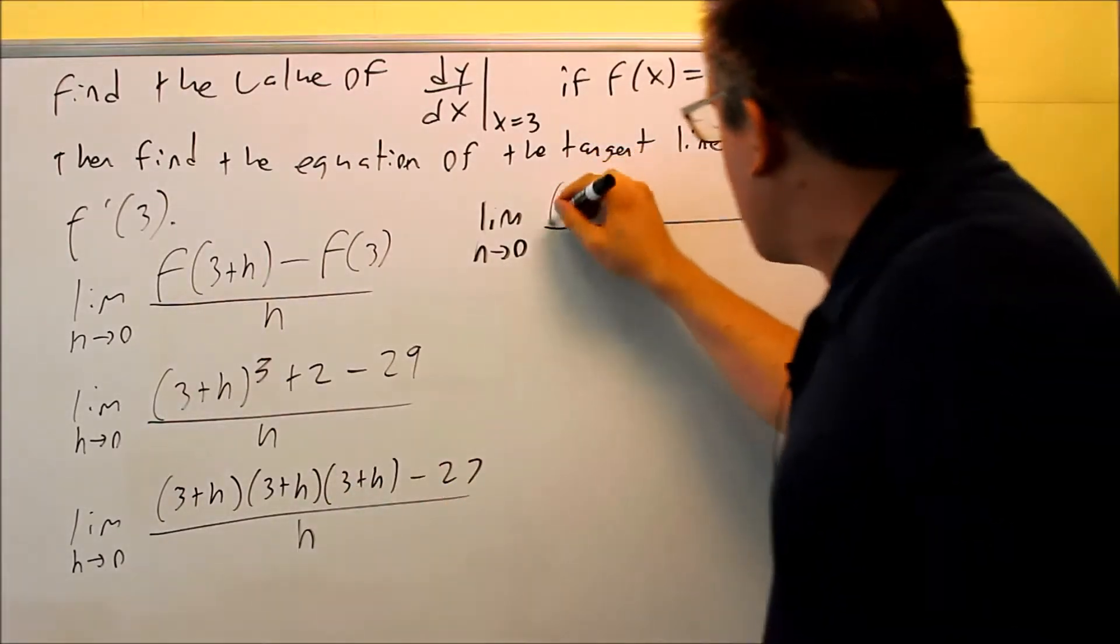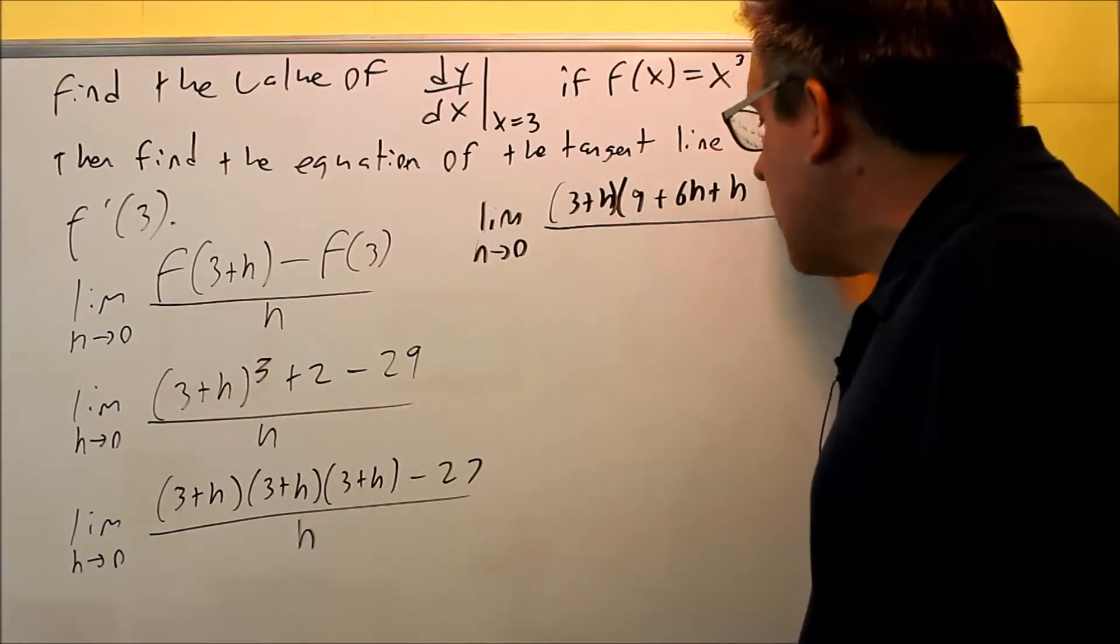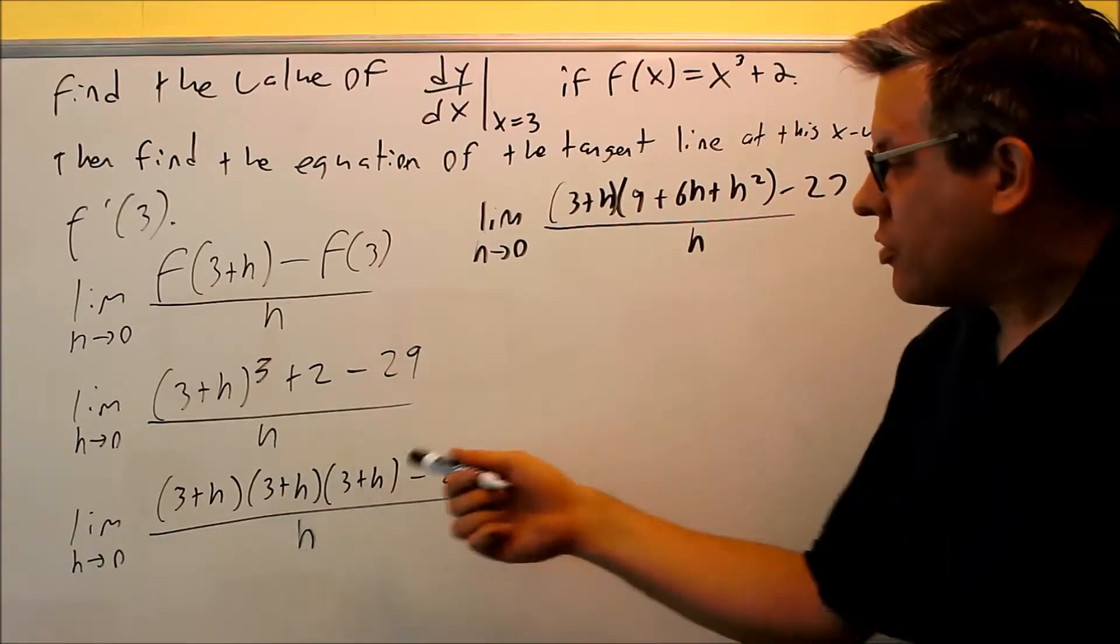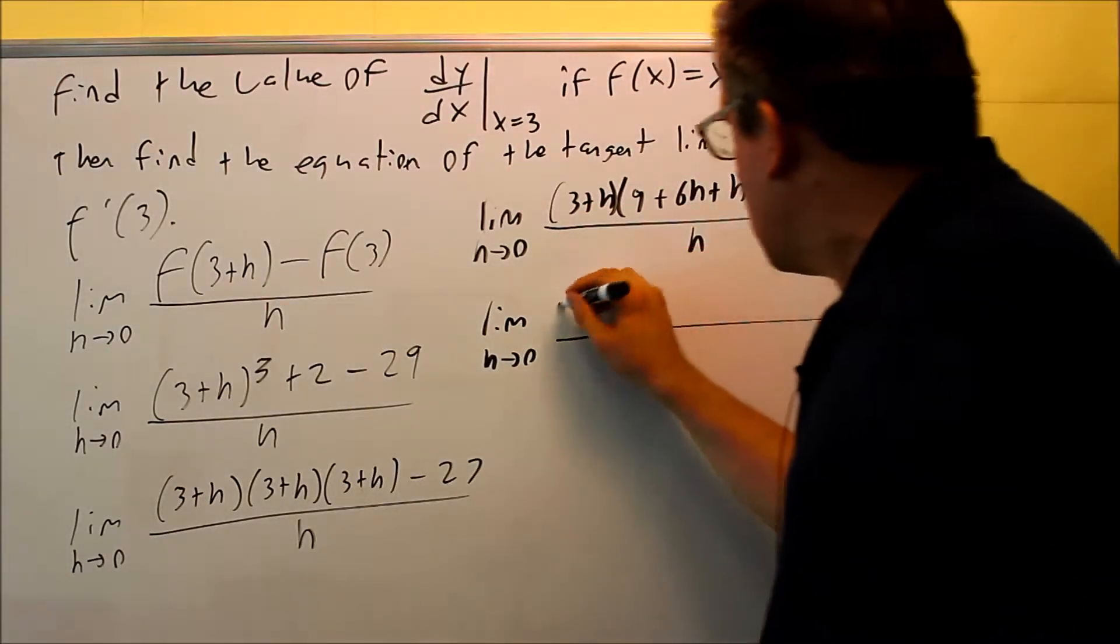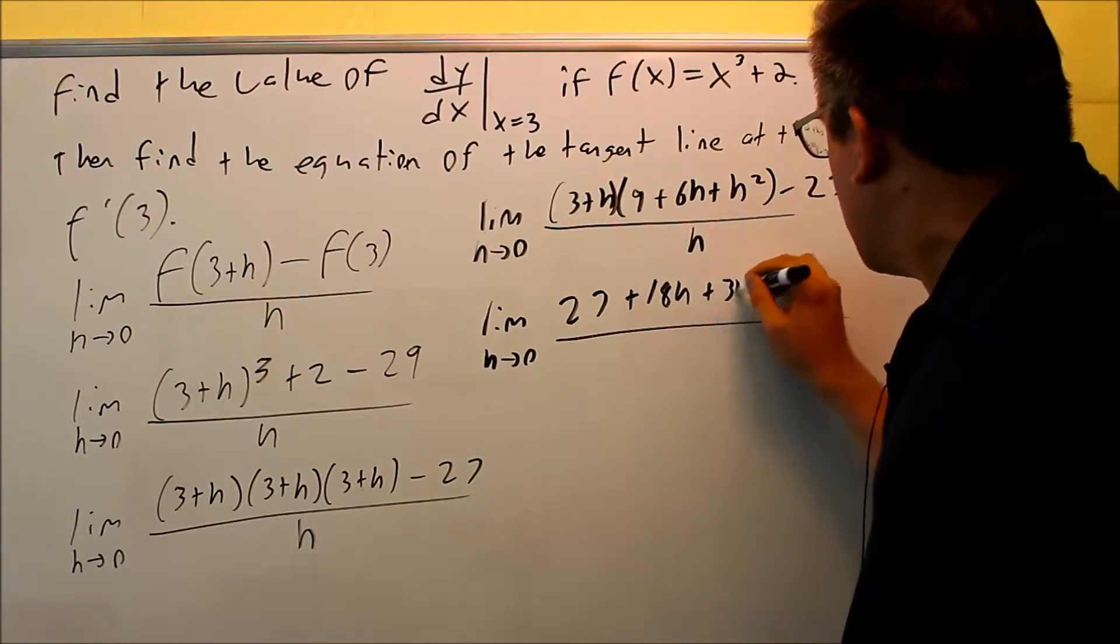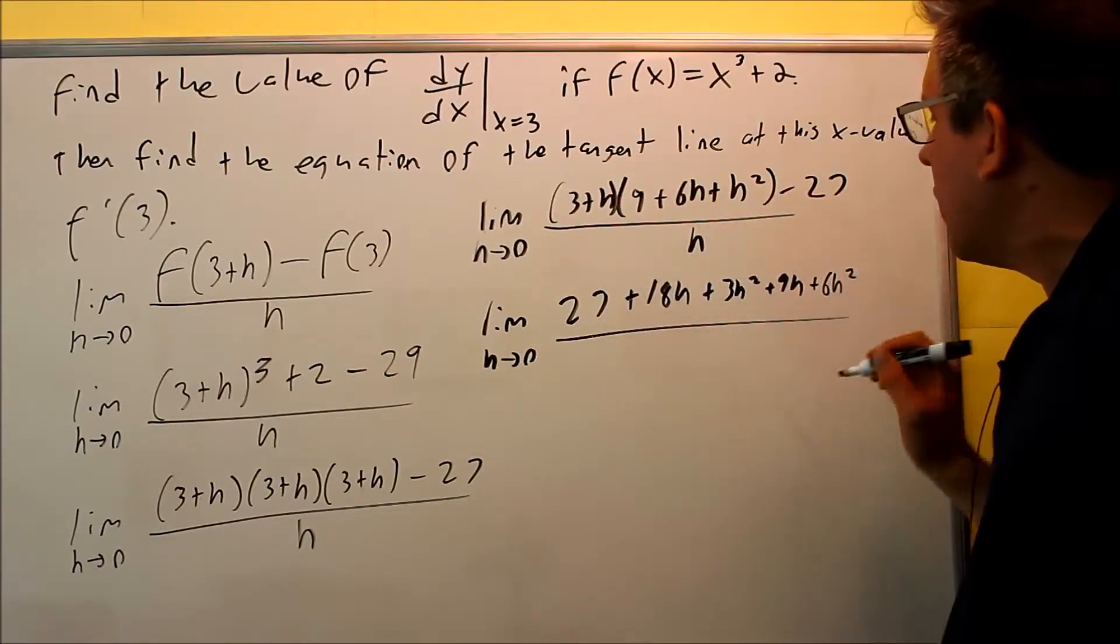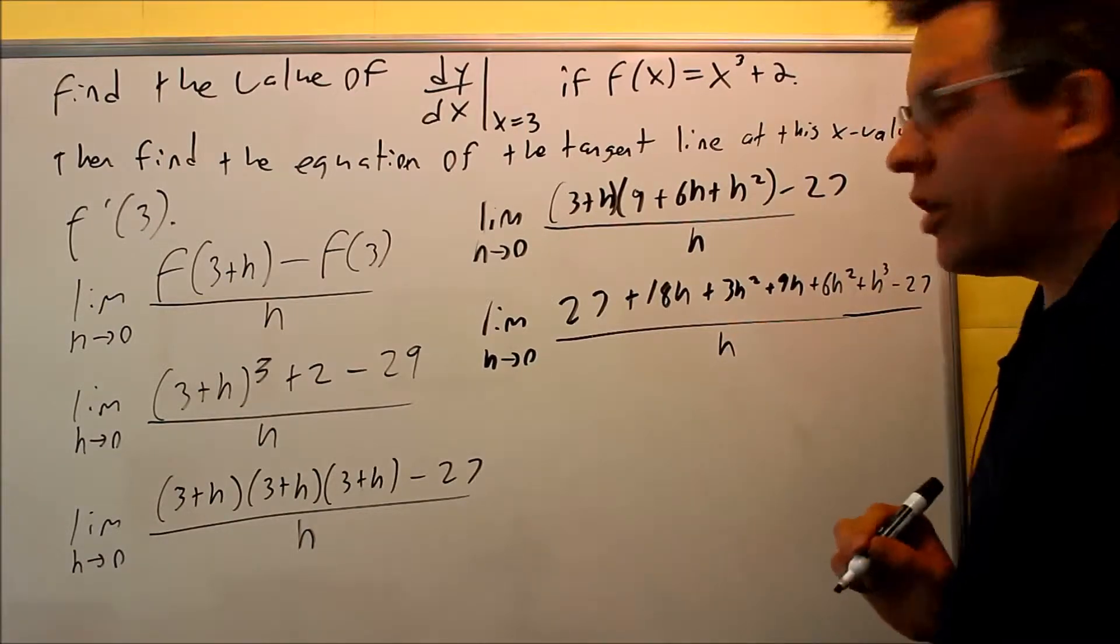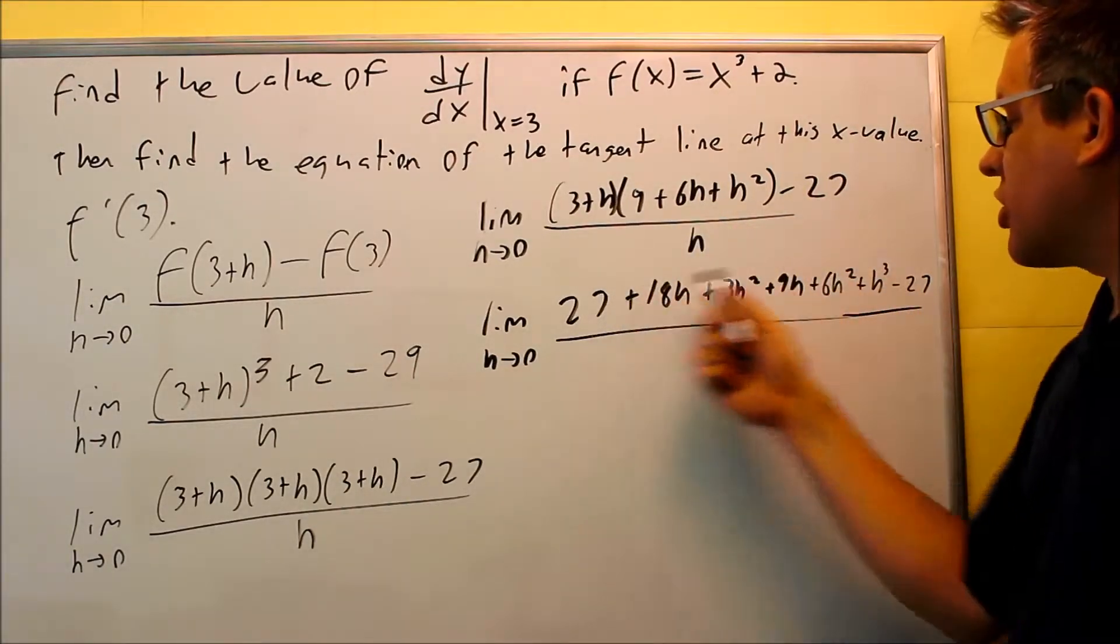Limit as h goes to 0. We're going to multiply 2 of these together first, so we're going to do 9 plus 6h plus h squared minus 27, all that's going to be over h. Then since I multiplied 2 of them, now I can multiply 1 more. We're going to do 3 times everything inside the parenthesis: 27 plus 18h, and then we're going to do 3 times h squared is 3h squared, then we're going to do h times everything, 9h, 6h squared, h cubed, and then minus 27. All that's going to be over h. So again, 3 times everything inside, and then I did h times everything inside. Make sure you get 6 terms here, expand it out, and then they have minus 27.